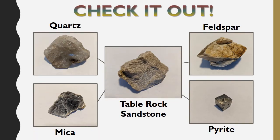Now let's take a look at a piece of sandstone from Table Rock, a geologic landmark in the Boise foothills. The image in the center is a piece of sandstone, and the images surrounding it are examples of the minerals we find in the sandstone. The gray minerals are quartz. The white minerals are feldspar — most people haven't heard of feldspar even though it is one of the most common minerals on the surface of the earth; some examples are moonstone, labradorite, and amazonite. The reflective plating minerals are variations of mica, and sometimes there are metals such as fool's gold or iron pyrite.